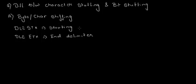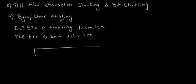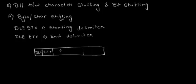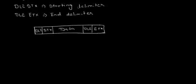For example, when data is being divided into frames, the frames that are actually transmitted over the link layer would look something like DLESTX, data, and DLEETX. One of the most commonly asked questions is: what if an ASCII character of the type DLE occurs in the data? This can be resolved by using the escape sequence.